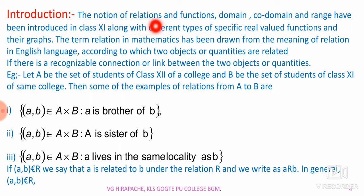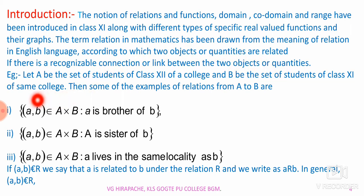Introduction: The notion of relations and functions — domain, co-domain and range — have been introduced in class 11 along with different types of specific real-valued functions and their graphs. The term 'relation' in mathematics has been drawn from the meaning of relation in English language, according to which two objects or quantities are related if there is a recognizable connection or link between them. For example, let A be the set of students of class 12 of a college and B be the set of students of class 11 of the same college. Then some examples of relations from A to B are: